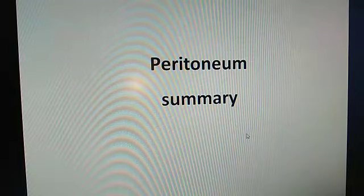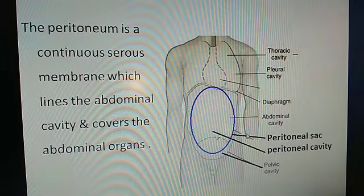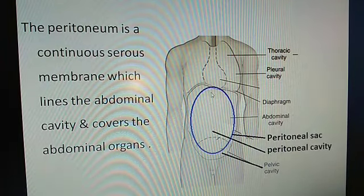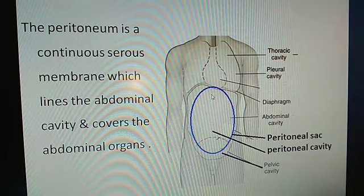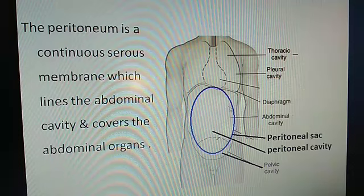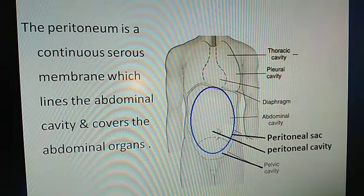Summary of the peritoneum. The peritoneum is a serous sac lying as the boundary of the abdominal cavity. This is the peritoneal sac and this is the peritoneal cavity.